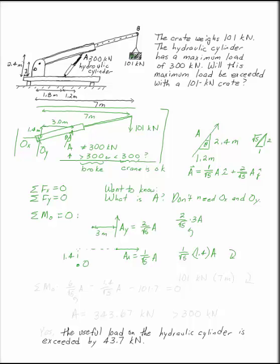The only other moment we have is the 101 kN, which acts at a perpendicular distance of 7 meters, and tends to spin also clockwise. So our sum of the moments at O is 6 over the square root of 5A minus 1.4 over the square root of 5A minus 101 times 7 equals 0.